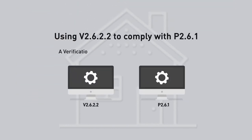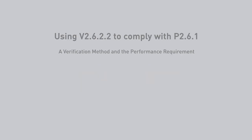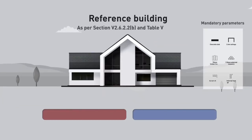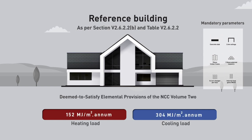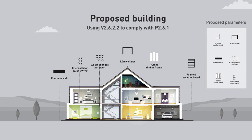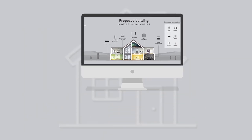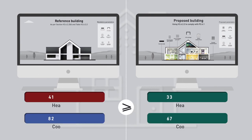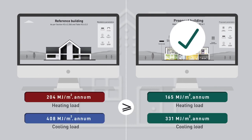This method involves using software to perform two modelling runs. The first models the building complying with the minimum deemed to satisfy provisions of NCC Volume 2 — this is the reference building model providing the cooling or heating load targets. The second run models the building using the actual design elements proposed, remembering that these still need to comply with the NCC requirements for insulation, thermal breaks and building sealing. Heating and or cooling loads are calculated for each model, and if the proposed building loads equal or are less than that of the reference building, then it complies with the requirements.